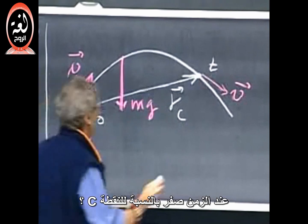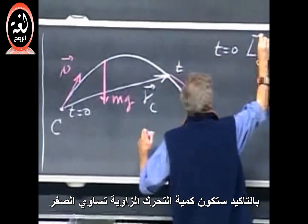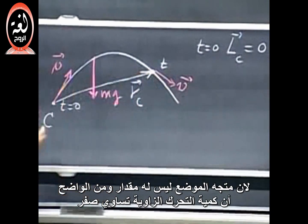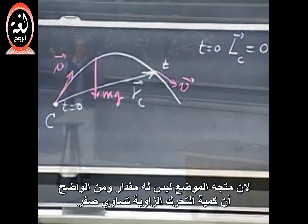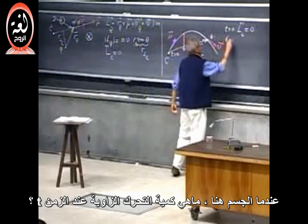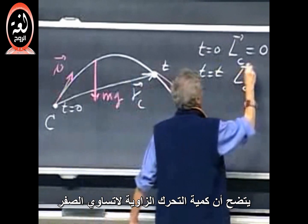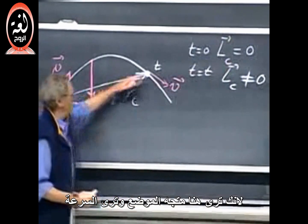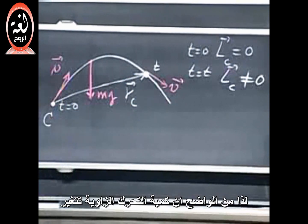What is the angular momentum relative to point C at time zero? The angular momentum is clearly zero, because the point itself, the mass itself, is at point C. So the position vector has no length. So it's clear that it's zero. What is the angular momentum at time t when the object is here? Well, that angular momentum is clearly not zero, because you see here position vector and you see the velocity. So clearly, the angular momentum was changing.